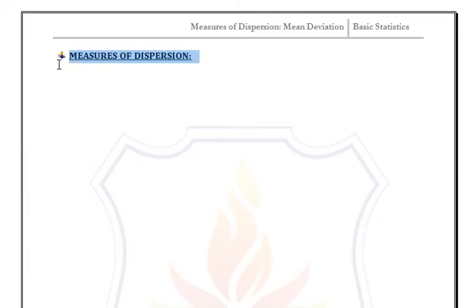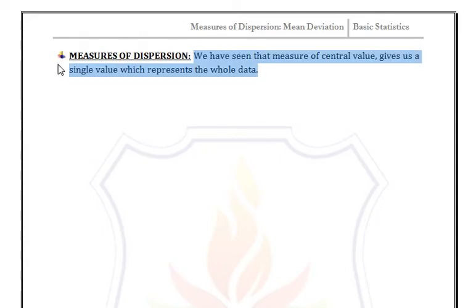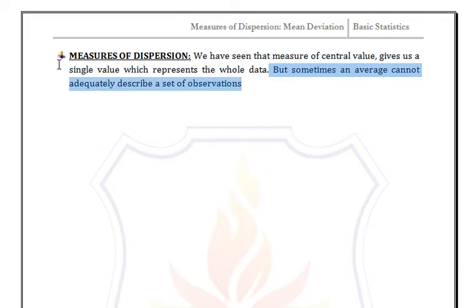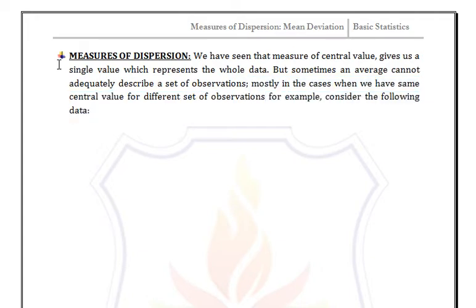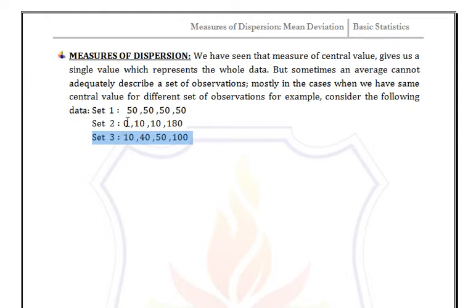In this video we discuss measures of dispersion. We already know that a measure of central value gives a single value which represents all the data, but sometimes an average cannot adequately describe a set of observations, mostly in the case when we have the same central value for different sets of observations.